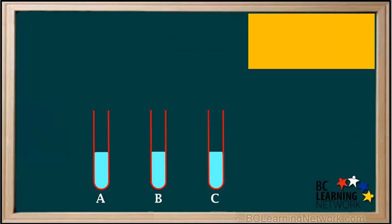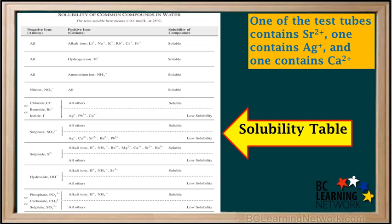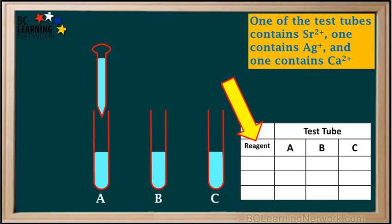Let's do a little experiment. We're given three test tubes: A, B, and C. One of the test tubes contains strontium, or Sr2+ ions. One test tube contains silver, or Ag+ ions, and the other one contains calcium, or Ca2+ ions. Our job is to find out which is which. We need to have the solubility table handy, and we'll add a little table here to record our results.